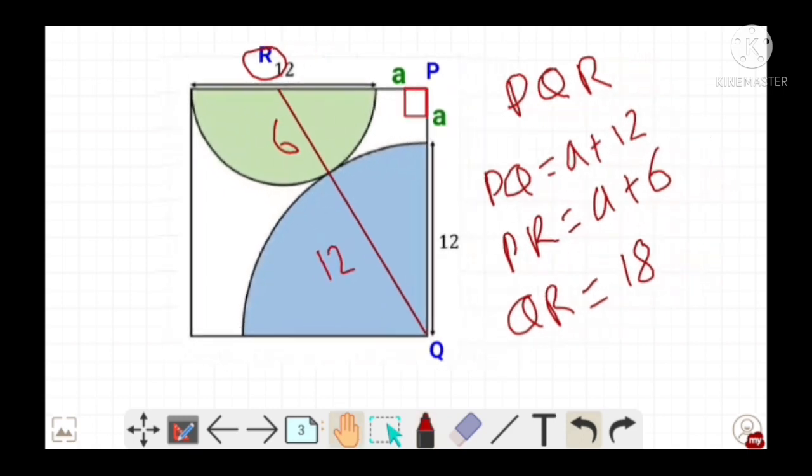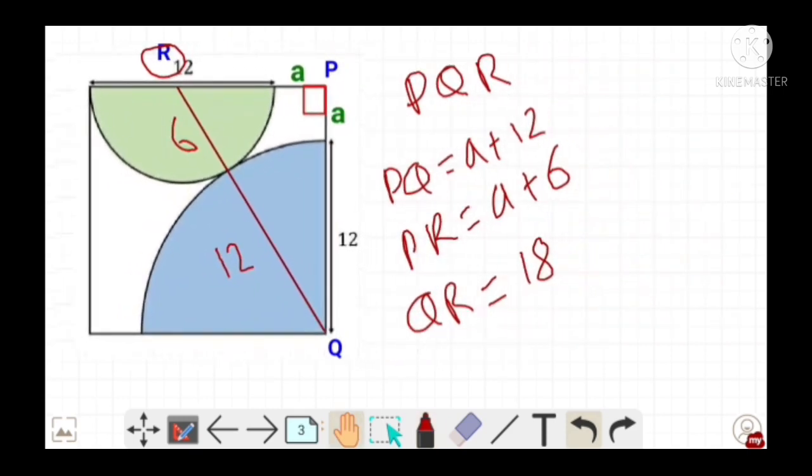Now using Pythagoras theorem on right-angled triangle PQR we get A plus 2L whole square plus A plus 6 whole square is equals to 18 square.